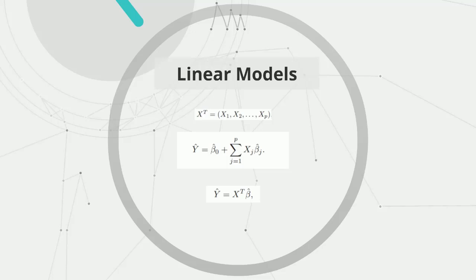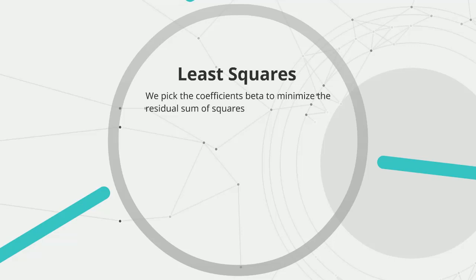Let's look at how to actually solve this linear model. There are a couple of methods — least squares and nearest neighbors. For least squares: how do we fit the linear model to training data? By far the most popular method is least squares, where we pick the coefficients β to minimize the residual sum of squares (RSS). Here x_i^T β is our prediction for each individual point, and y_i is the actual result. The RSS as a function of β is a quadratic function of the parameters, so its minimum always exists, though it may not be unique.